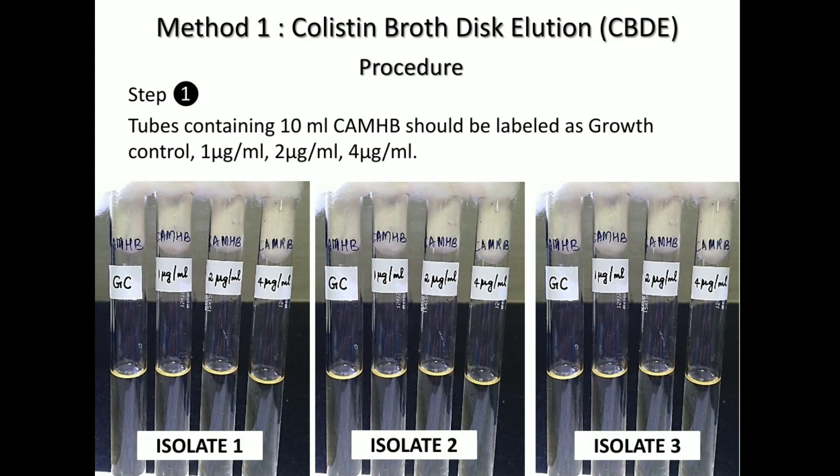Let us start the procedure. For each isolate you will require a set of 4 tubes of cation adjusted Muller Hinton broth. Label the tubes as: growth control, 1 microgram, 2 microgram, and 4 microgram. So for each isolate you require 4 tubes.